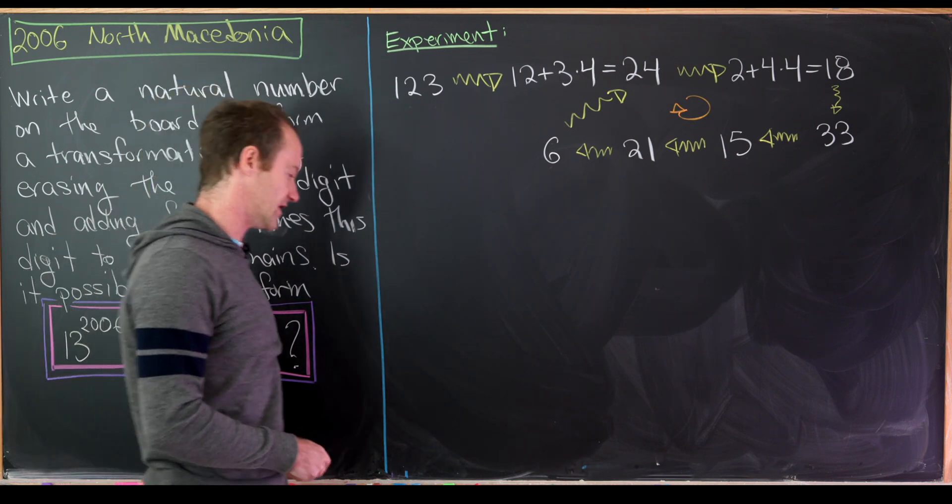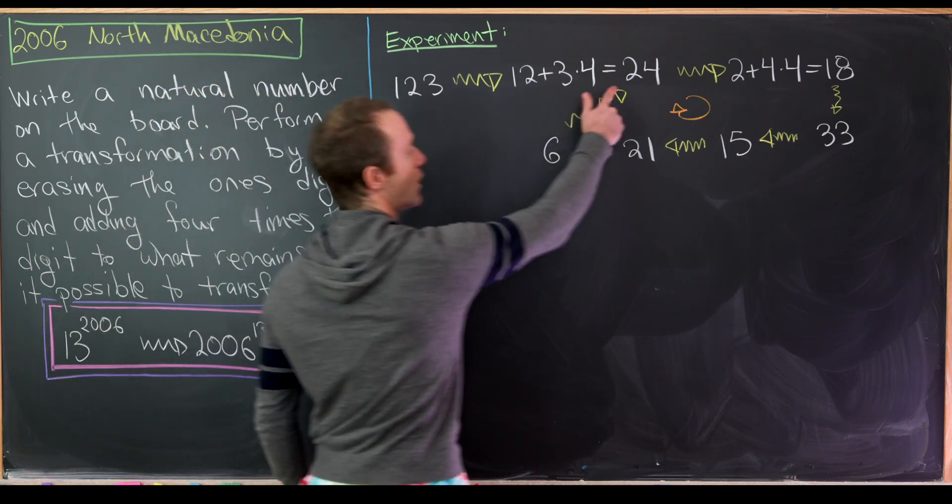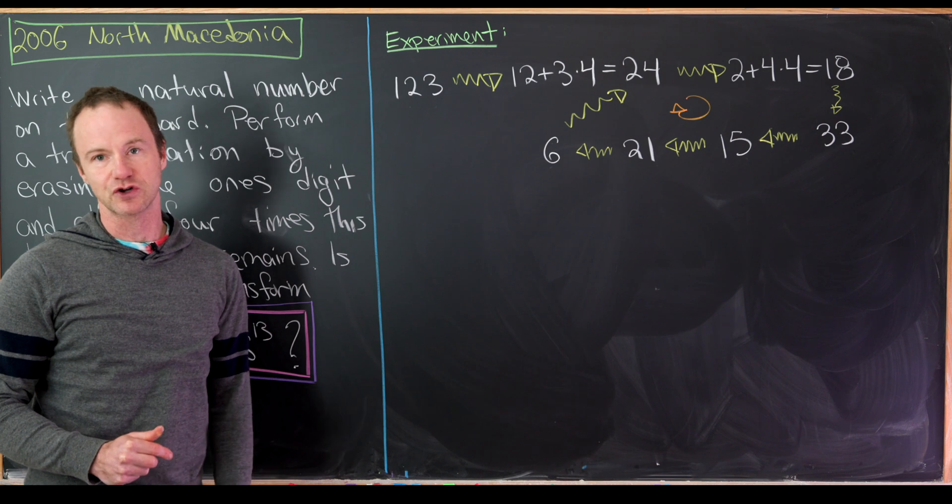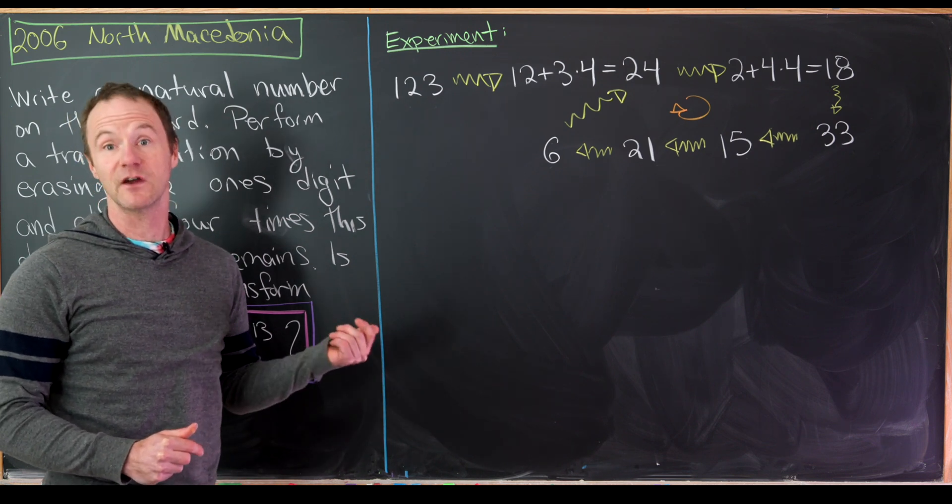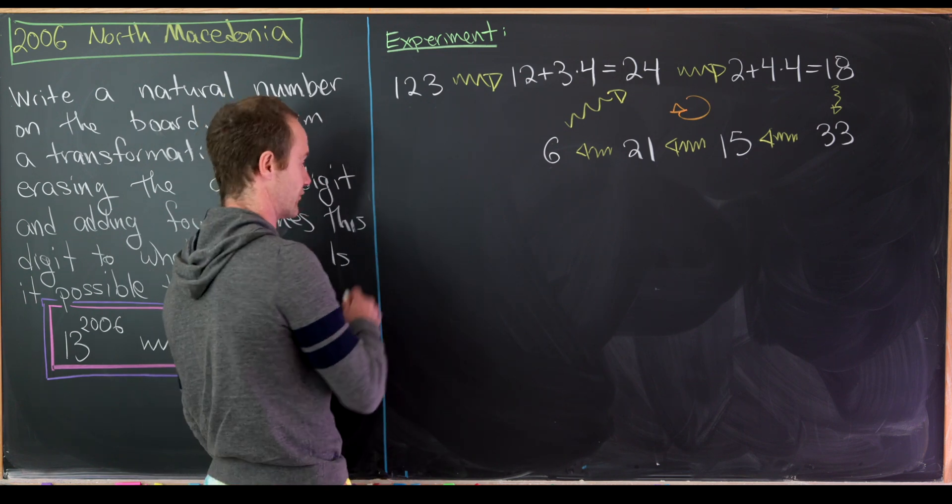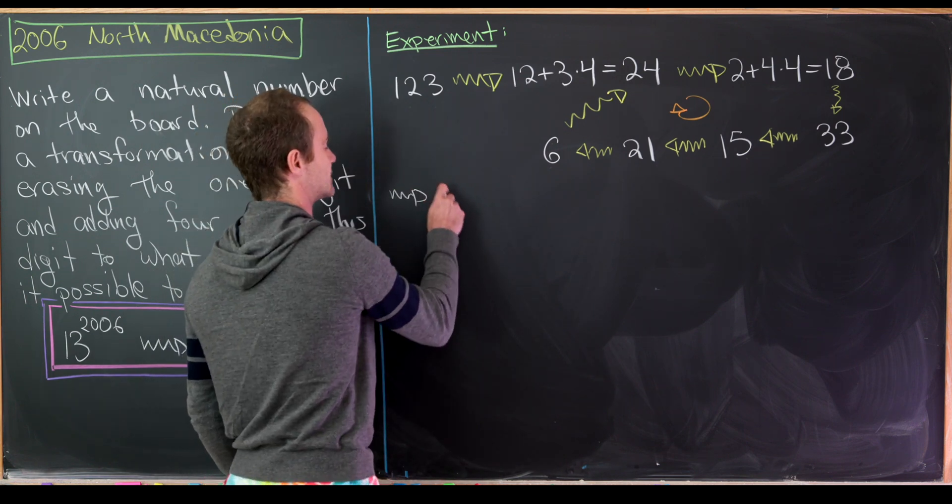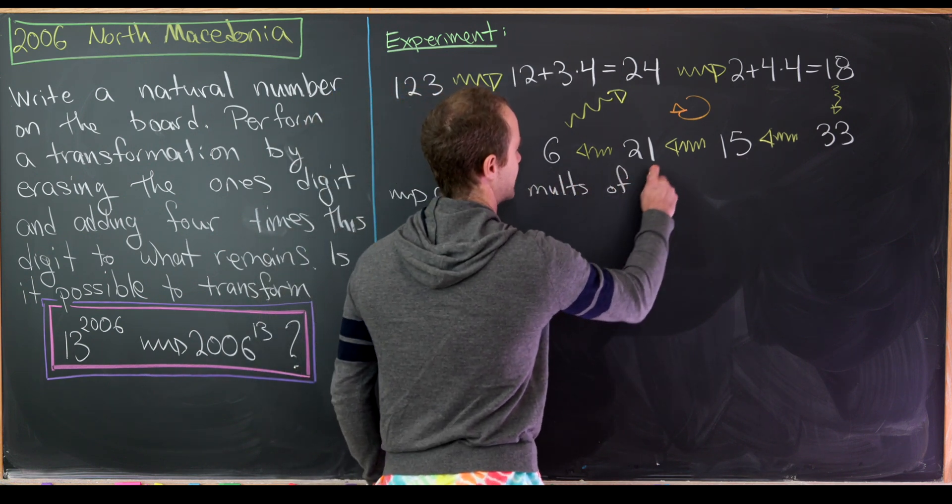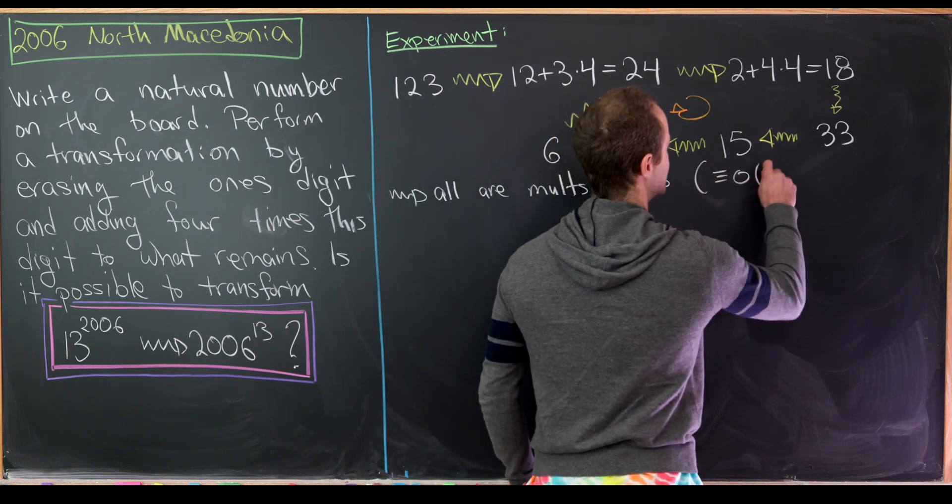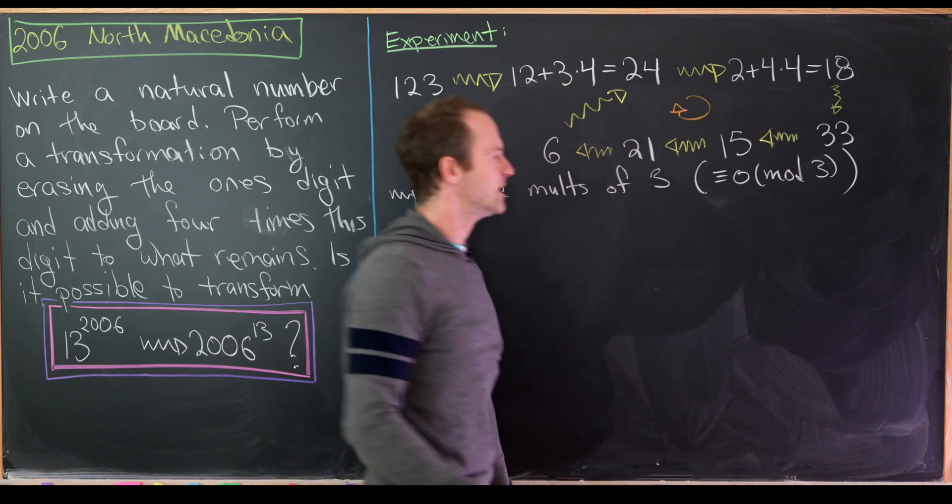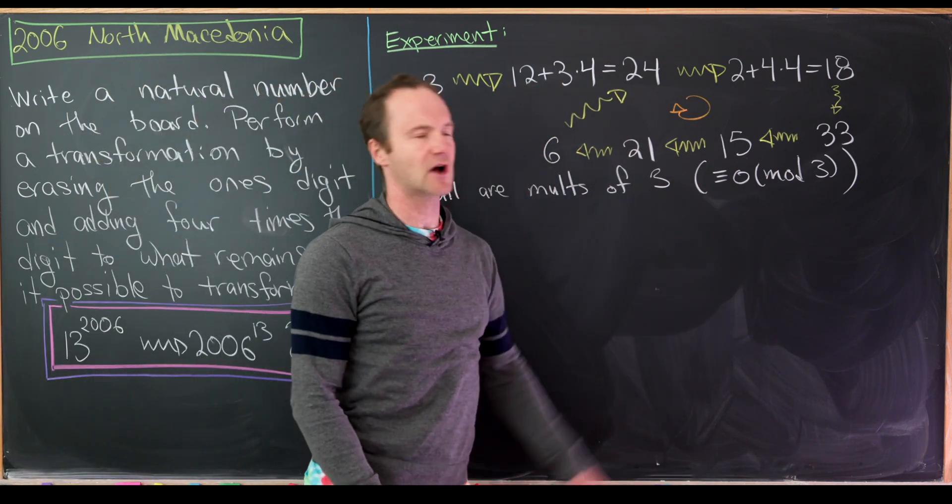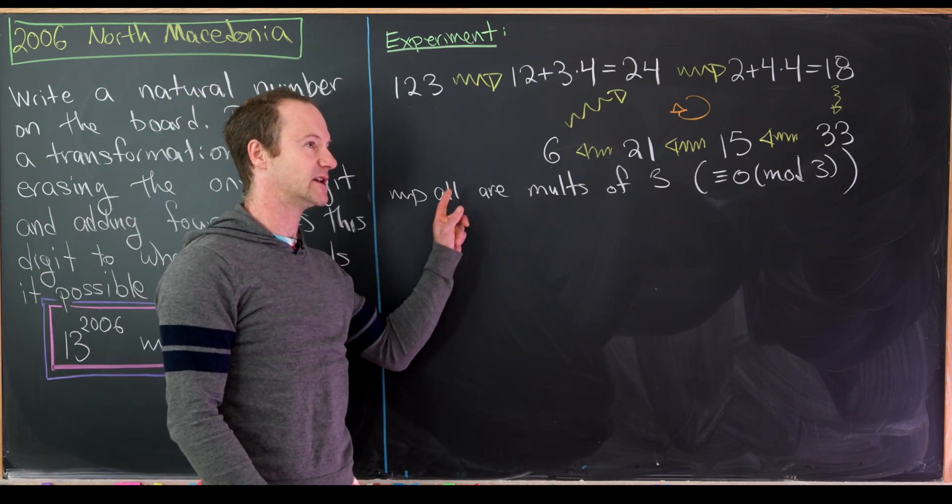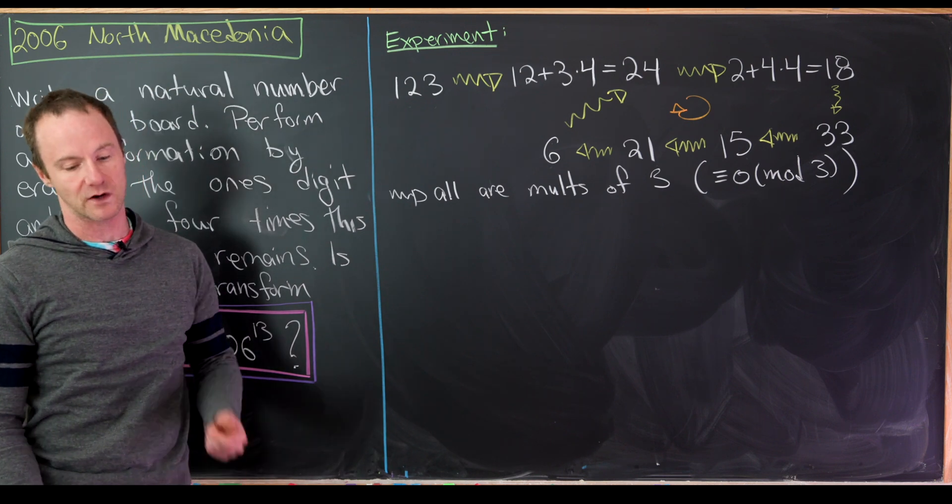Let's look at all of our numbers: 123, 24, 18, 33, 15, 21, and 6. What's true about all of those numbers? Well they're in fact all divisible by 3. So all are multiples of 3, in other words they are congruent to 0 mod 3. Perhaps we won't need to use the notion of congruence mod n but just in case we do we'll get that on the board as an equivalence to being multiples of 3 or divisible by 3.